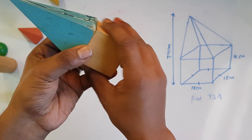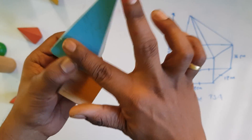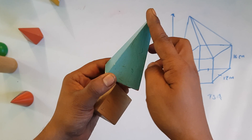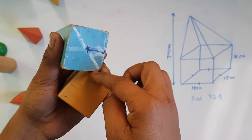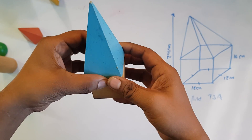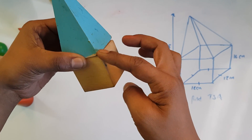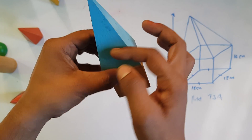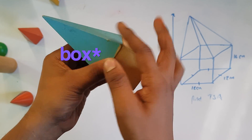The total surface area of this pyramid will consist of the 4 triangular face areas plus the square base area. The bottom area is also included in the total surface area calculation.